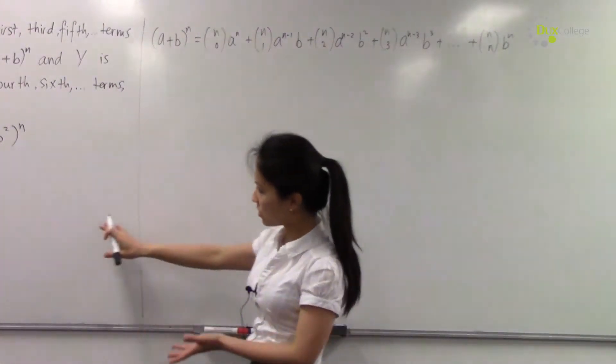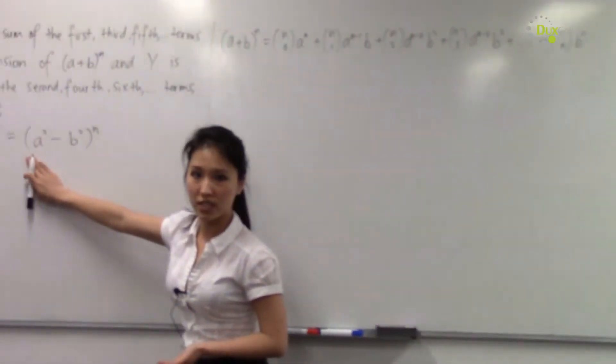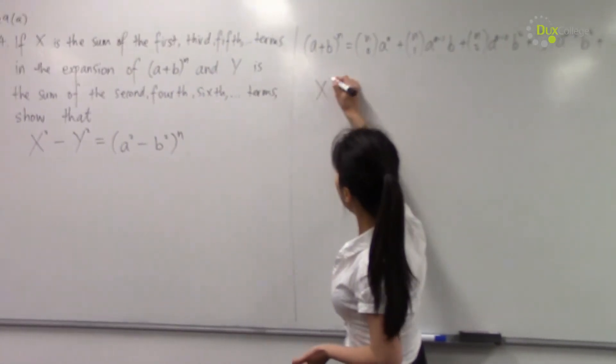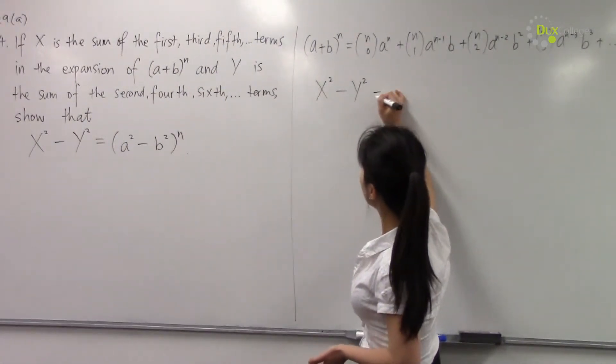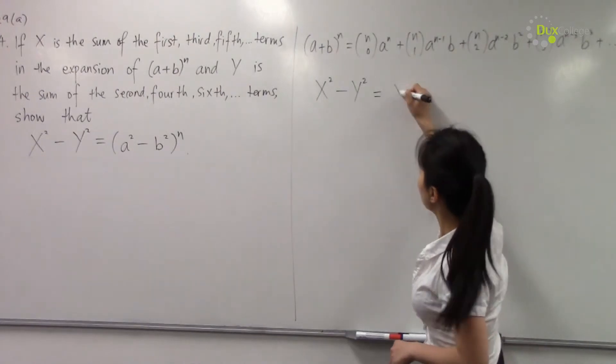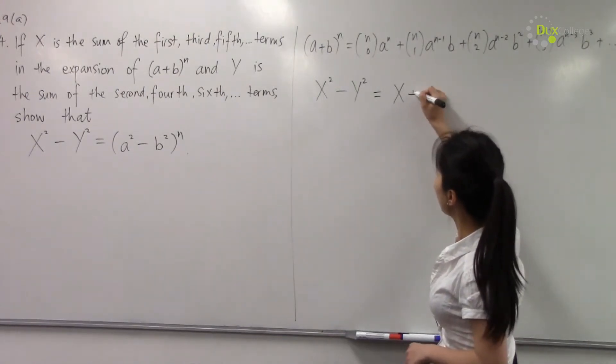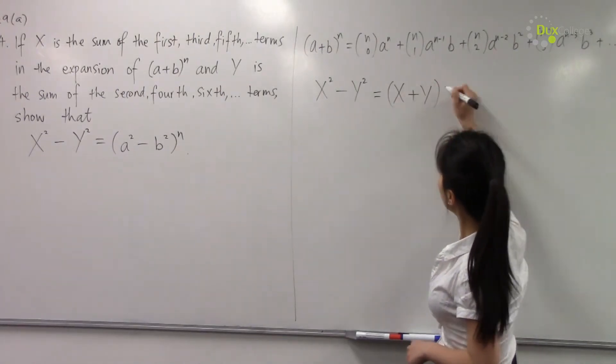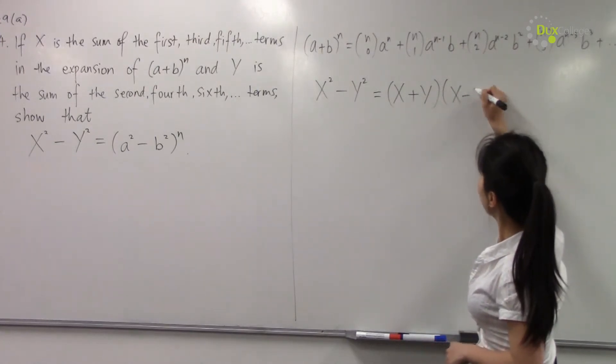Now come back to our question and observe this expression. We have X² - Y². You can see that this is the difference of two squares, which can be simplified to (X+Y)(X-Y).